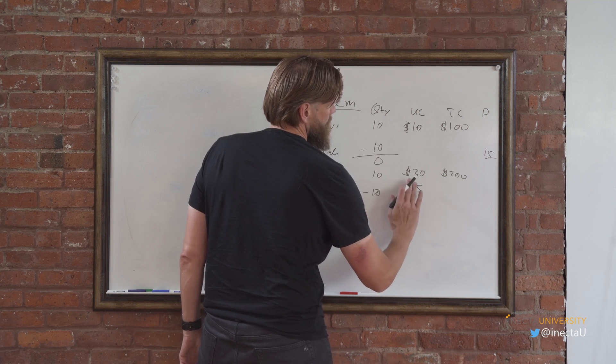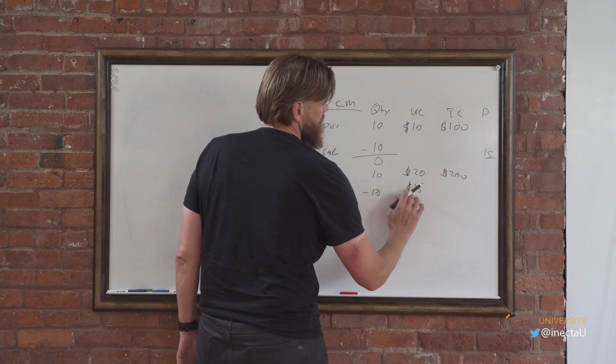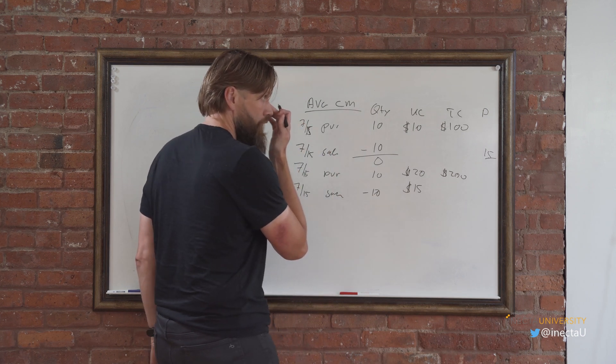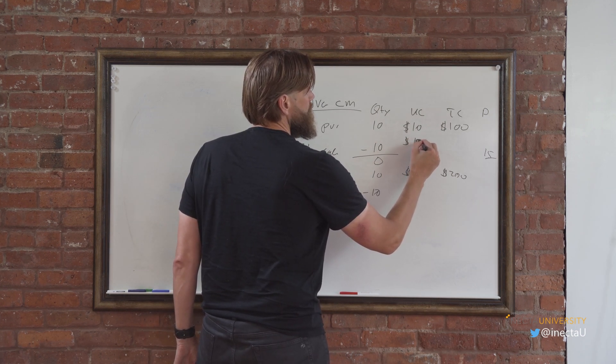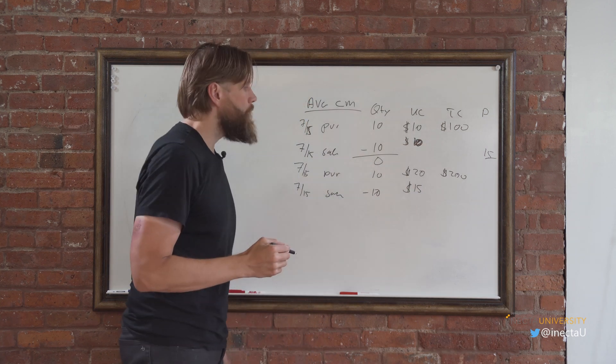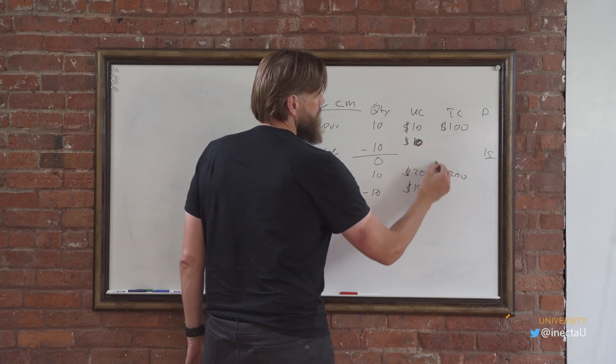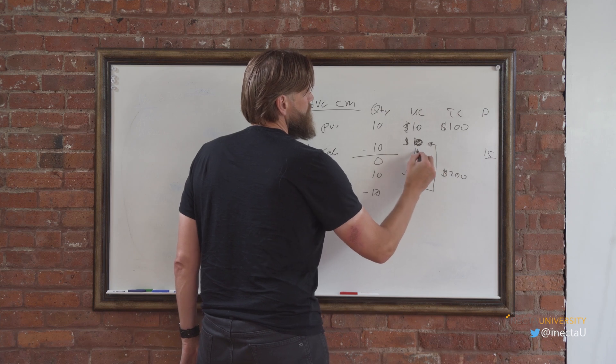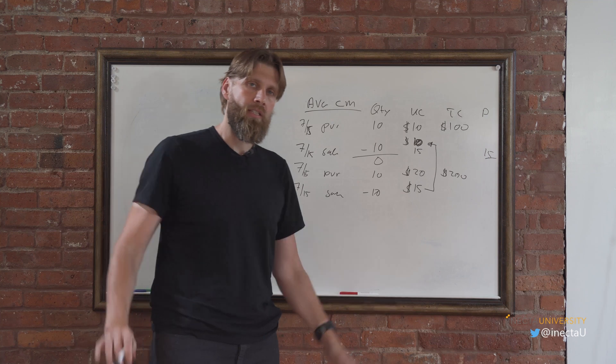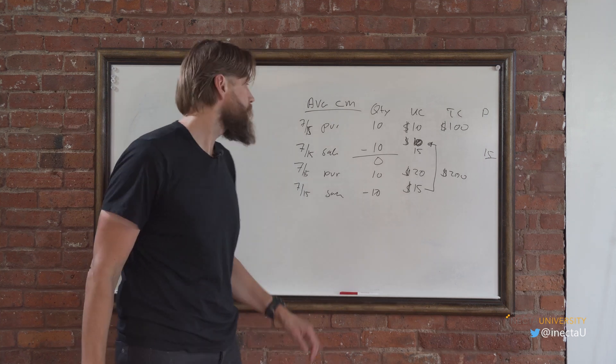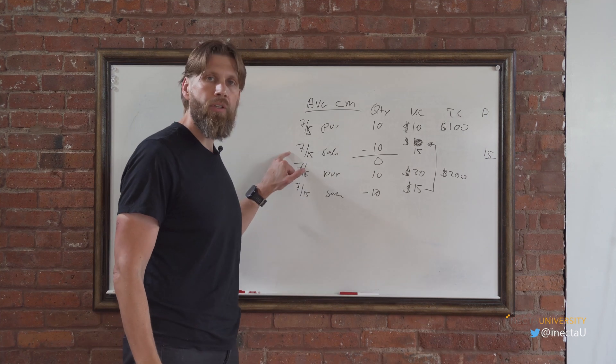So the cost of goods sold, basically, or the cost of this transaction and this transaction, the cost of it was $10 before. But what it does, it goes in here and fixes that and makes it $15. So within the day, it's averaging all transactions. It doesn't matter whether you go to zero or not.